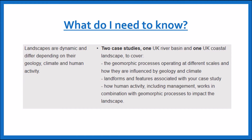So what do you need to know? You need to know about one UK coastal landscape — in this case we're looking at North Norfolk. You need to know about the geomorphic processes, which is things like erosion, transportation, deposition and weathering, and how they're operating at different scales. By the word scales, we're looking at the size of the area — is it the whole coastline, is it a little village, or is it just maybe five or ten metres on the coastline?